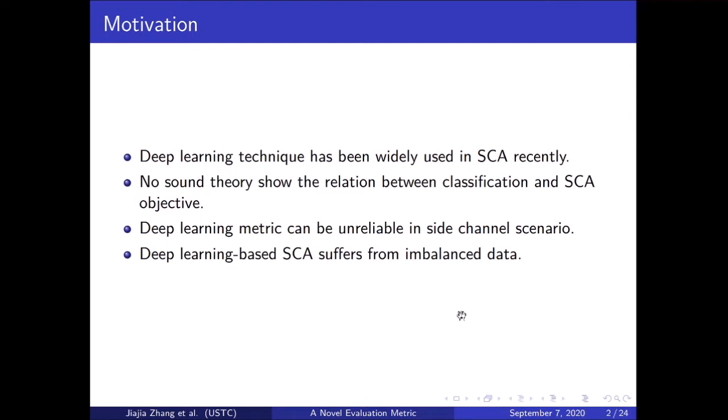The deep learning paradigm has received a significant amount of attention and shown great potential recently. However, deep learning methods were first used to solve classification problems. As previous works pointed out, such analysis and classification problems do not share the same objective. Also, some works have noticed that there is a gap between metrics like guessing entropy, success rate, and the deep learning metric accuracy.